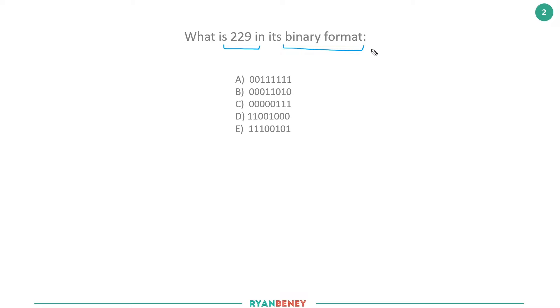First one up: What is 229 in its binary format? The last video we had binary and changed it to decimal. In this one, we've got a decimal and we're going to change it to binary. The first thing we should be doing at this point is writing out the binary conversion chart. If you're not familiar with this, go back and watch the other videos.